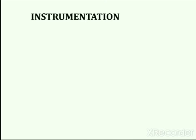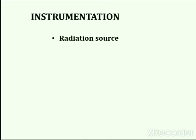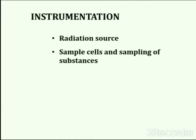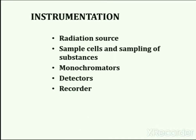An IR spectrophotometer contains several parts arranged in a well-defined manner. These parts are: radiation source, sample cells, monochromators, detectors, and recorder.